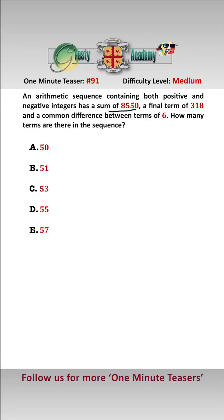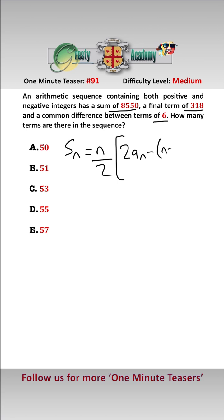As we are given the sum, the final term, and the common difference, we're going to use the slightly lesser known formula for the sum of an arithmetic progression: S_n equals n over 2 times (2a_n), where a_n is the final term, minus (n minus 1) times d.